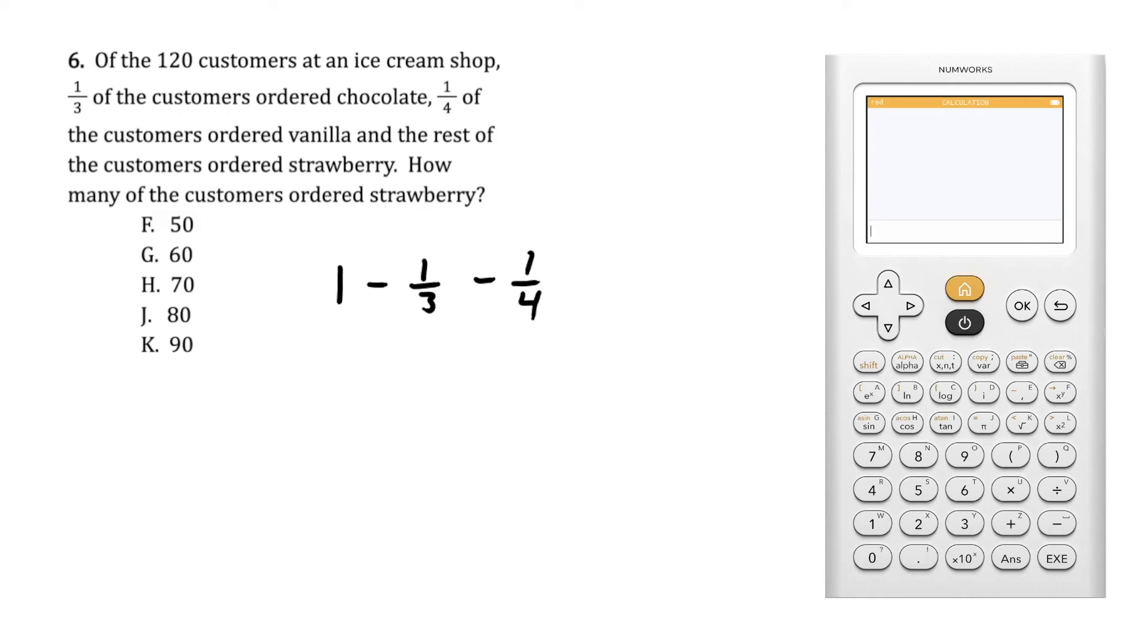On the NumWorks graphing calculator, we can evaluate one minus one-third minus one-fourth, which gives us a fraction of five-twelfths.